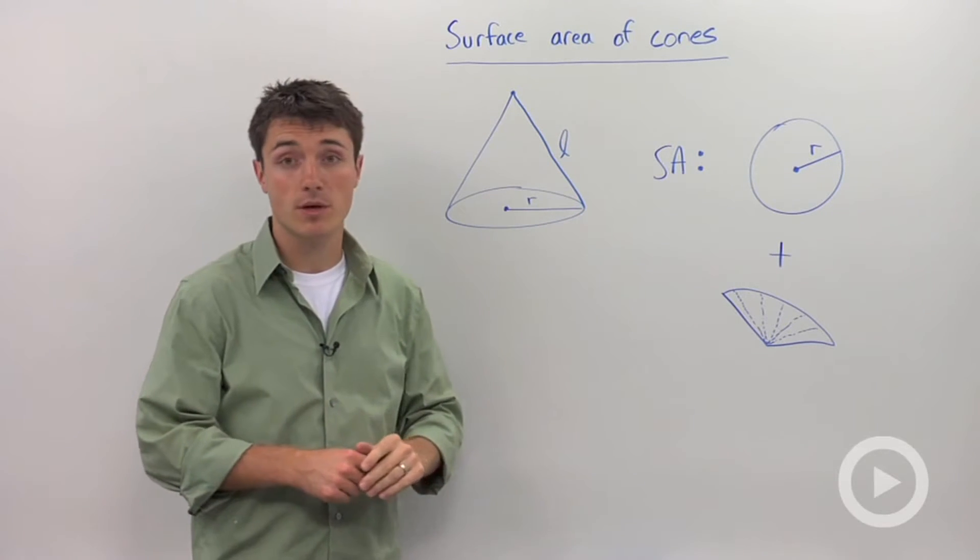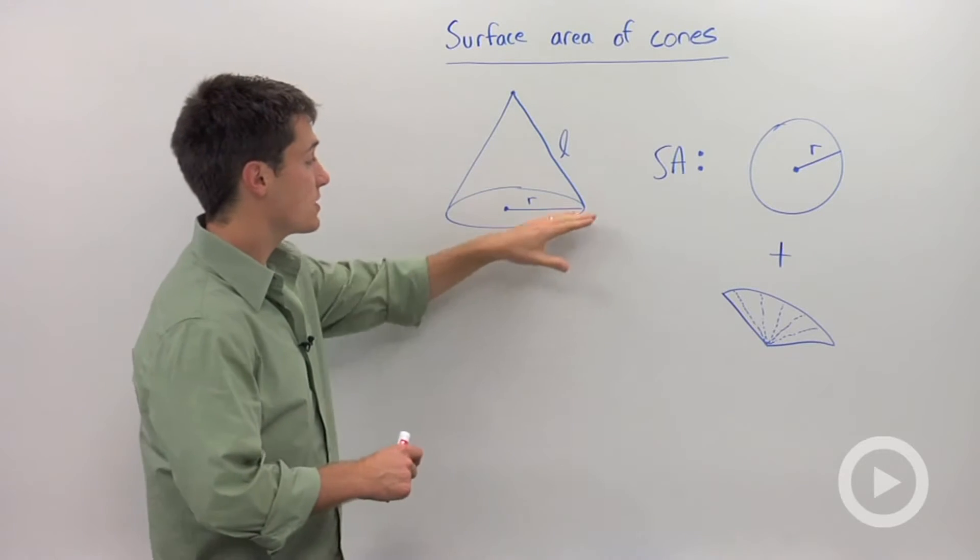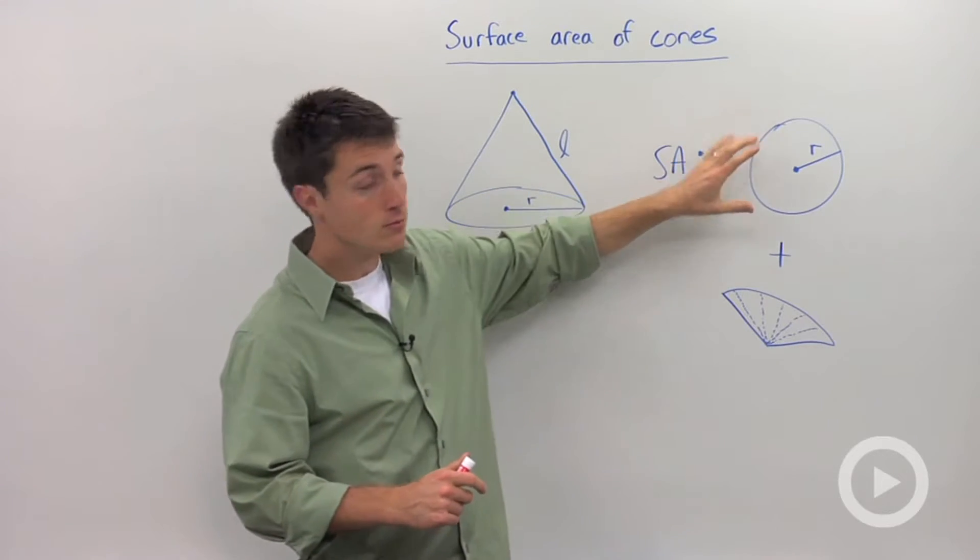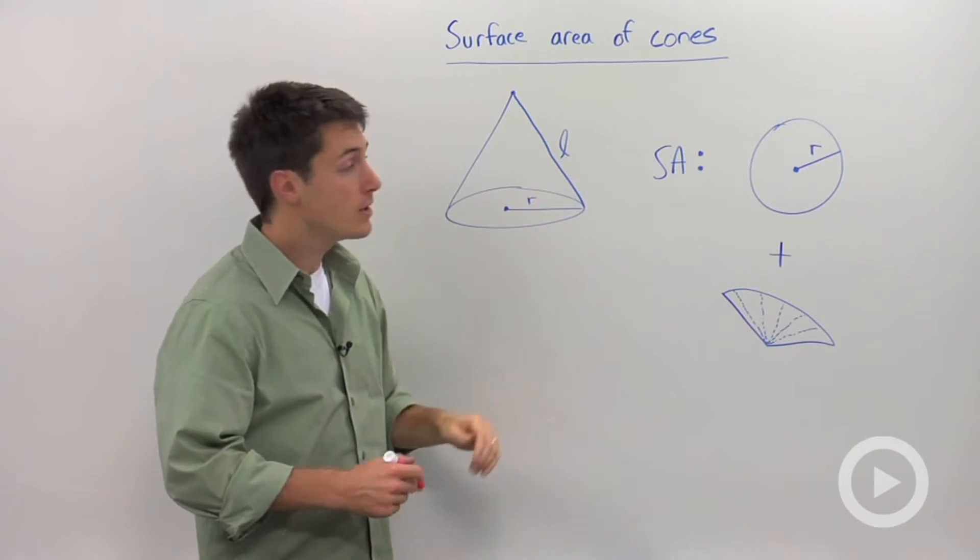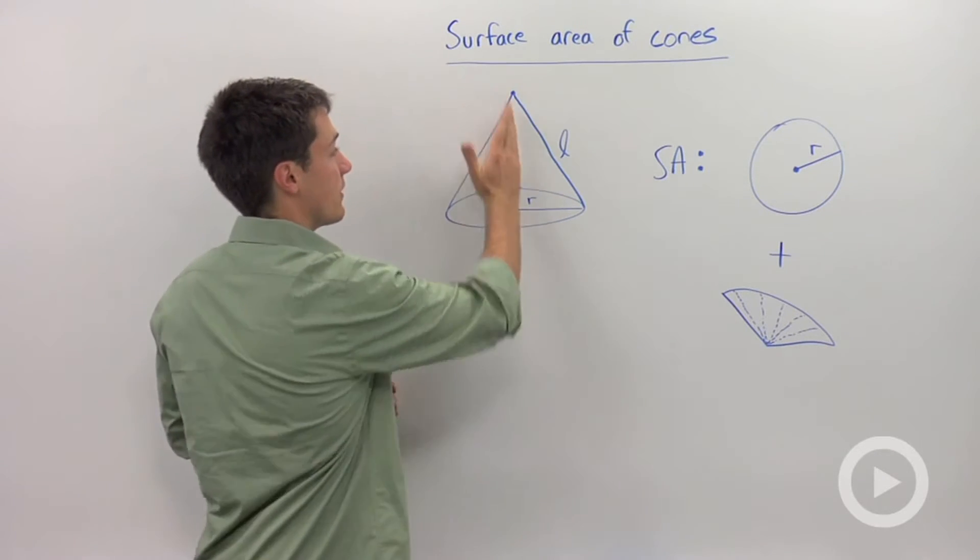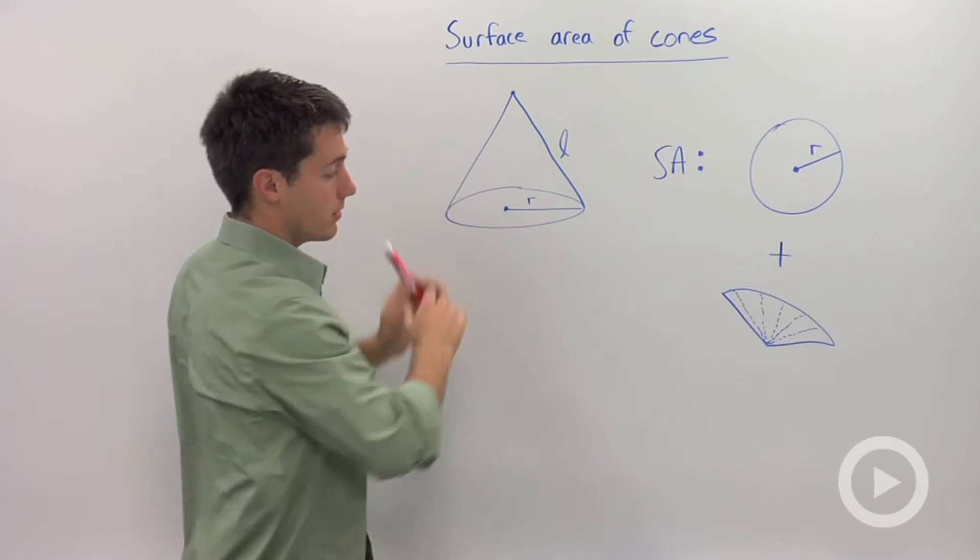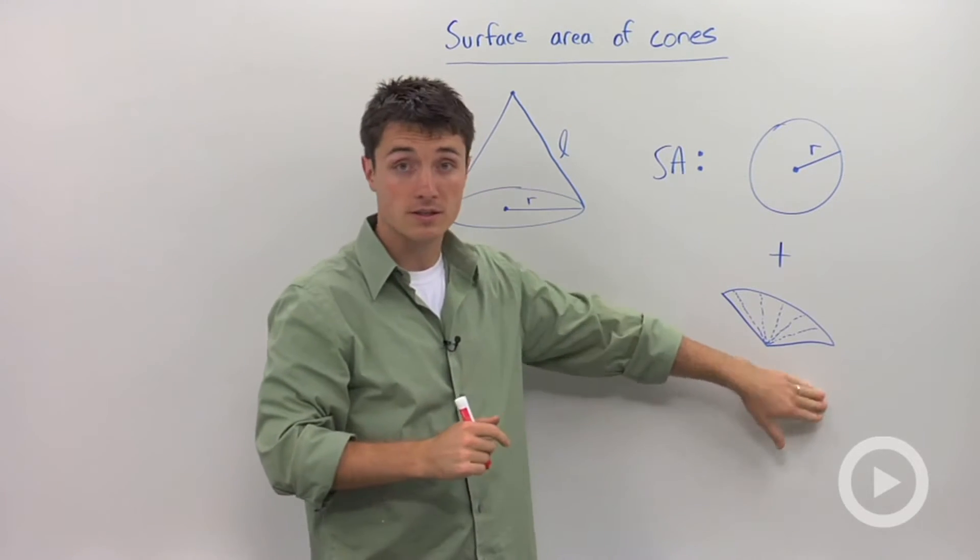So what we're going to do is we're going to separate this into two pieces. The first is the base, which is a circle with radius R, and the second is the slant height L. So if I took a scissors and cut the cone part and I fanned it out, it would look like a sector.